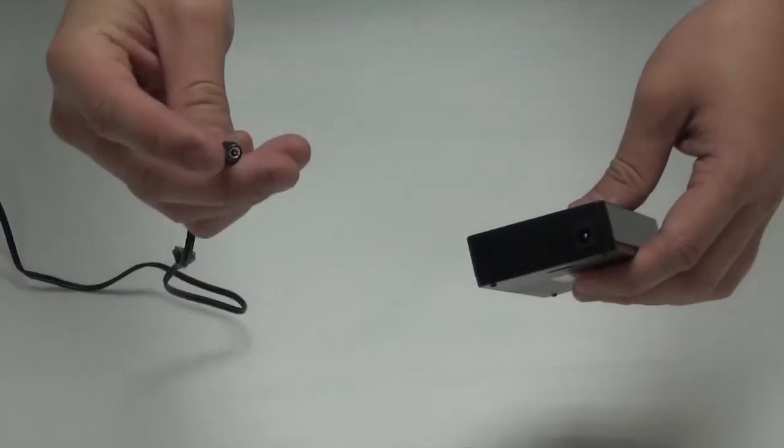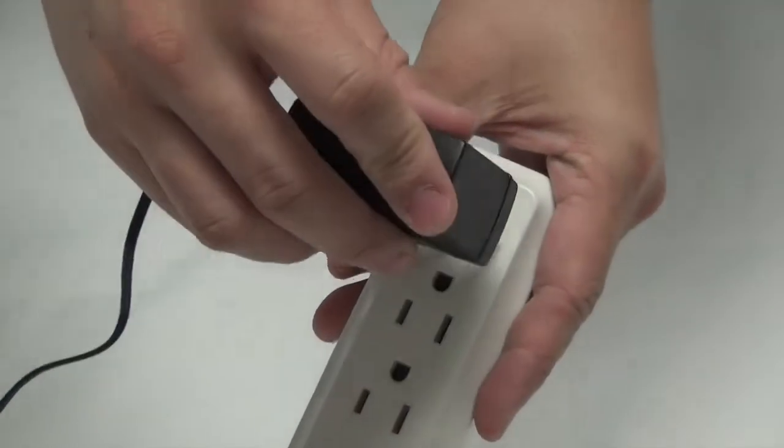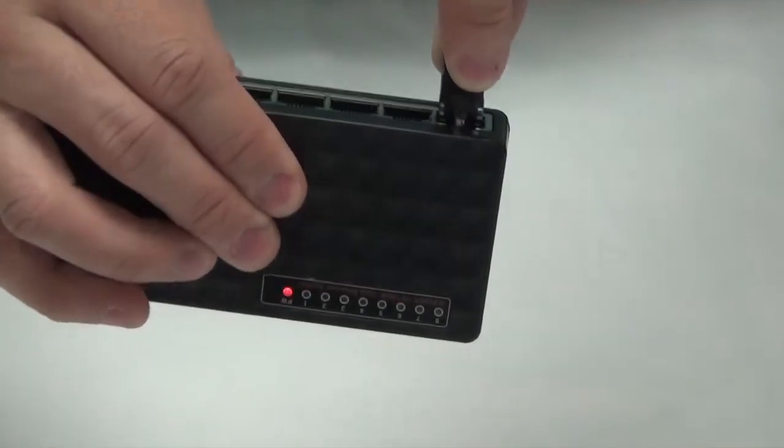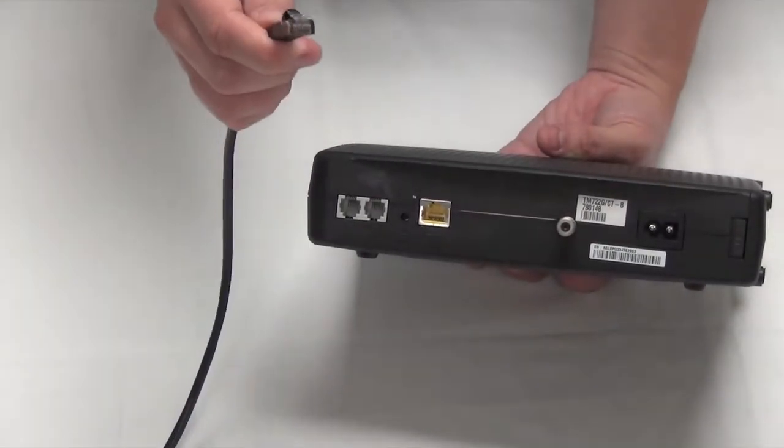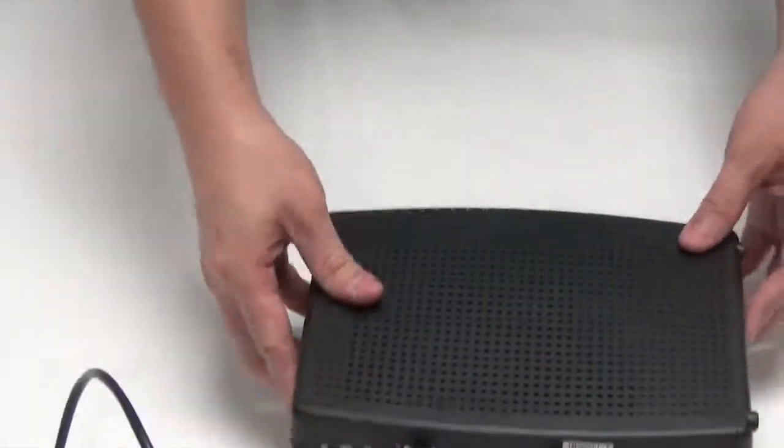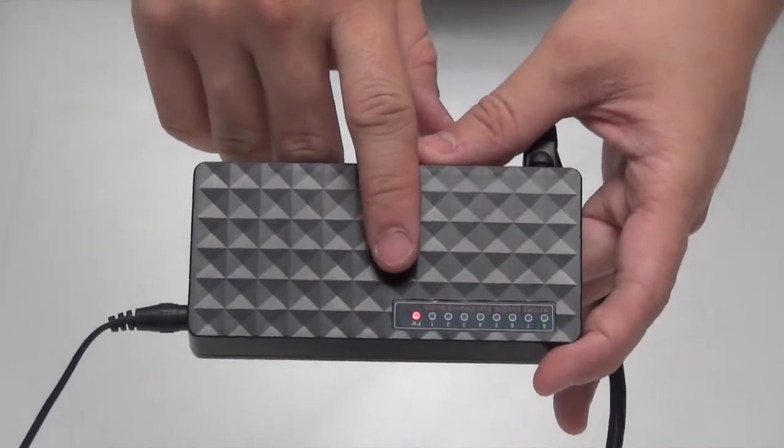Step 1. Connect the switch with power. Plug the network cable into any port. Then connect it to an internet router. Make sure lights are on.